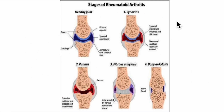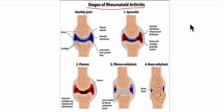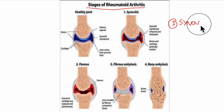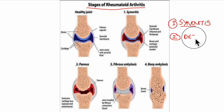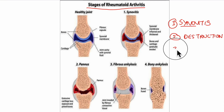After having learned what rheumatoid arthritis is and its major causes, let us understand the different stages. We can divide the stages into: the stage of synovitis — where there is inflammation of the synovium — the stage of destruction, and the stage of deformity.